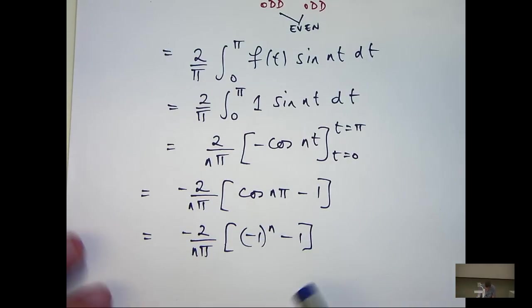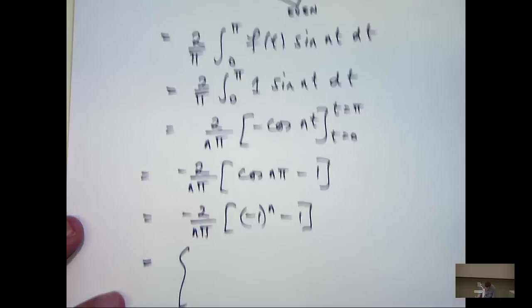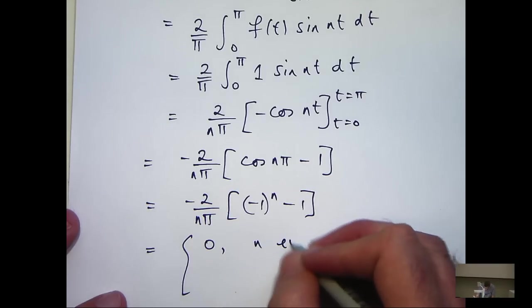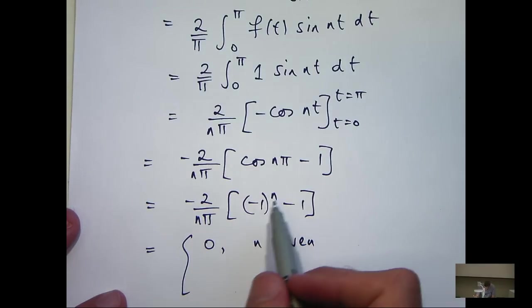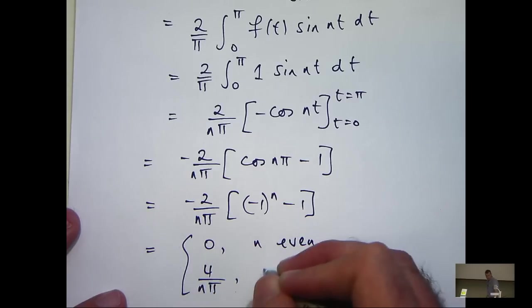Now I can even simplify this further because cos nπ is just the following: minus 1 to the n. Now how does that help you? Well, you can see here if n is even, then this is actually going to be 0. And if n is odd, this is going to be negative 2. So I can go a little further and simplify. So if n is odd, that will be minus 2. So I'll get positive 4 on nπ.